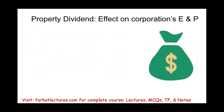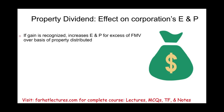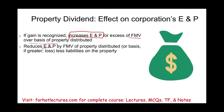What is the effect of a property dividend on earnings and profit? If the company recognizes a gain, increase earnings and profit for the excess of fair market value over the basis. Note: on the CPA exam, sometimes the earnings and profit is already reflecting the gain — if not, you must increase it. Then reduce earnings and profit by the fair market value of the property distributed, less any liability on the property.